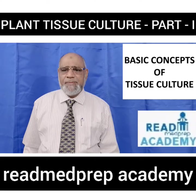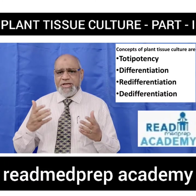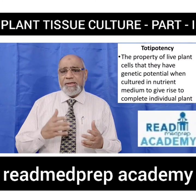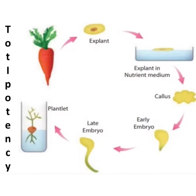The basic concepts of tissue culture are totipotency, differentiation, redifferentiation, and dedifferentiation. Totipotency is the property of a live plant cell — when cultured in nutrient medium — to give rise to a complete individual plant. Here you can see totipotency demonstrated with a carrot plant: a small part is taken as an explant, placed on nutrient medium, grows into a callus, develops into an early embryo, then a late embryo, and finally into a plantlet.